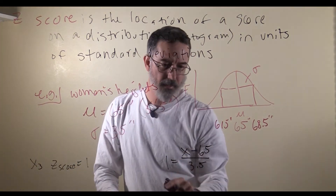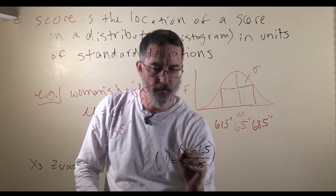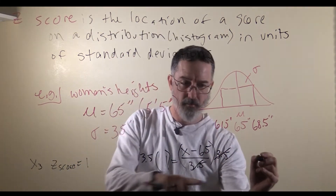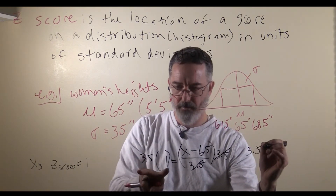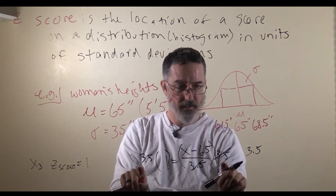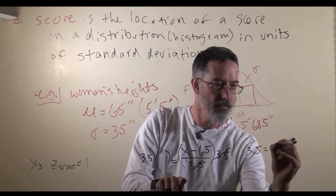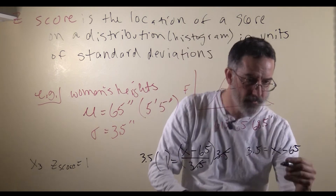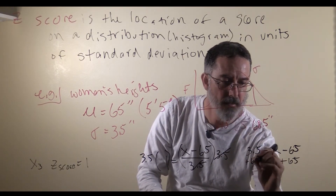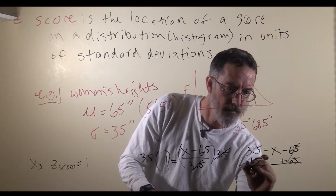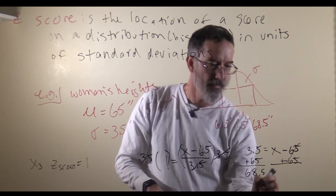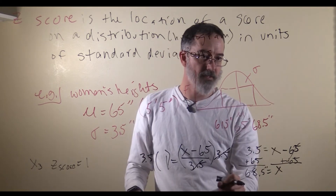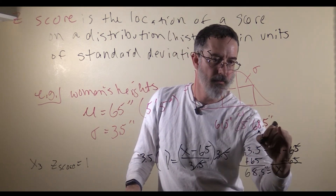We use algebra to get x by itself. Multiplying both sides by 3.5 cancels the denominator, giving 3.5 equals x minus 65. Then we add 65 to both sides, which gives 68.5 equals x. Woman number 3, whose z-score was 1 — one standard deviation above the mean — has a height of 68.5 inches.